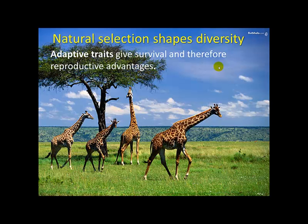Here we see a giraffe population. This process of natural selection can help shape diversity. Adaptive traits give survival and therefore reproductive advantages. An adaptive trait is one that allows a species to live and thrive more than other individuals within that same population. A giraffe with a longer neck is more able to eat vegetation, stay alive longer, and produce more offspring who would similarly have a long neck — so the longer neck is an adaptive trait.